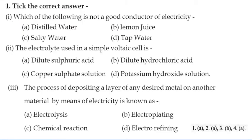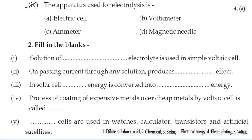Take the correct answer. The first question: which of the following is not a good conductor of electricity? The answer is distilled water — pure water is not a good conductor of electricity. Second, the electrolyte used in a simple voltaic cell — the answer is dilute sulfuric acid.